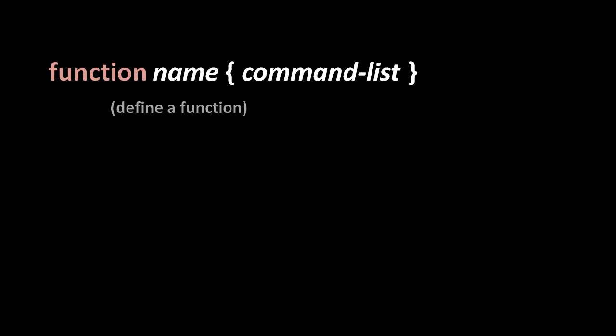Like any programming language, the shell allows us to create functions, and we do so with the built-in command 'function'. It expects as its first argument the name of the function you are defining, followed by a pair of curly braces inside which is a command list — the body which gets invoked when we call the function.